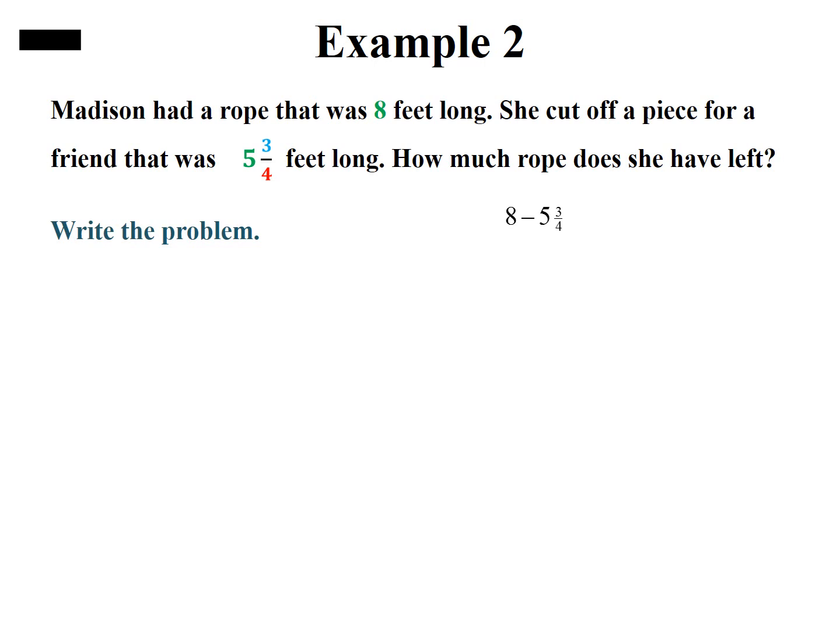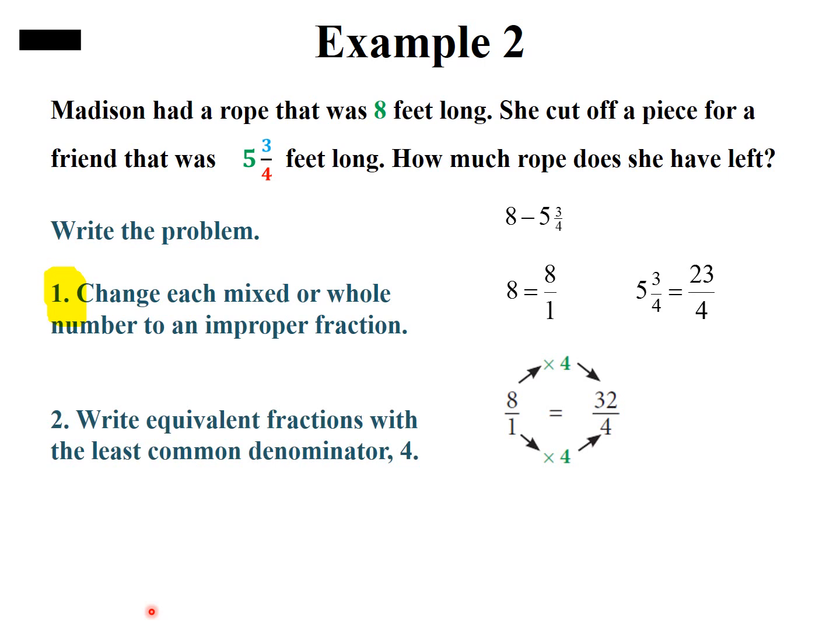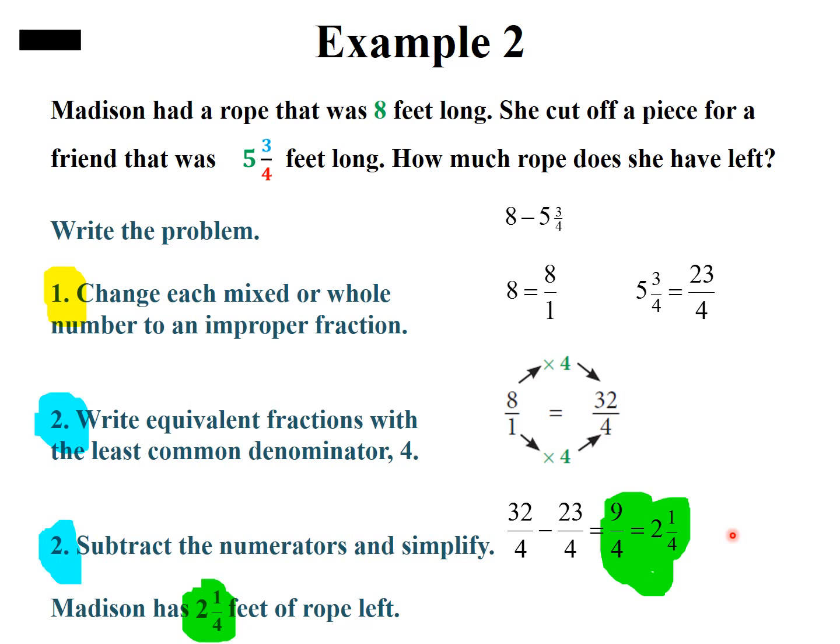If you remember how to change a whole number into an improper fraction, do it. If not, it's 8/1. Then 4 times 5 is 20 plus 3 is 23, and that's going to be over 4. We need a common denominator. One goes into 4 four times, so we're going to multiply the top and the bottom by 4 to get 32/4. 32/4 minus 23/4 is equal to 9/4, and when converted back into a mixed number is 2 and 1/4.